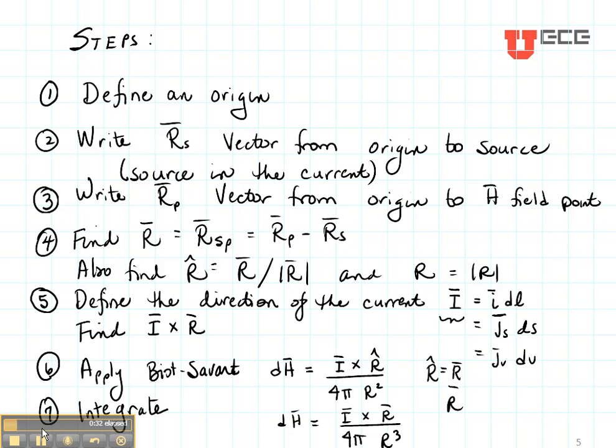Finally, we find R or RSP, which is a vector from the source to the point. That is RP minus RS. We also want to find the unit vector and the magnitude because we'll be using those in the equation.